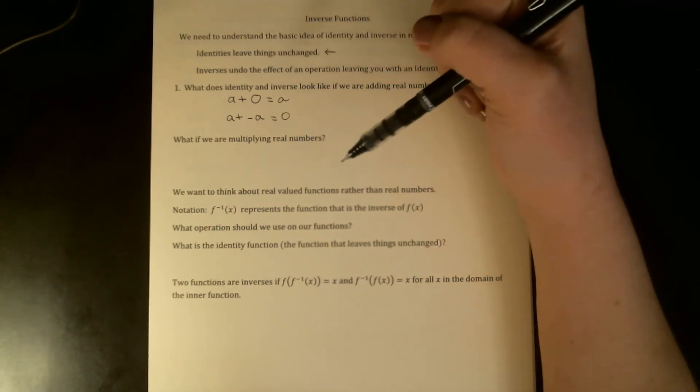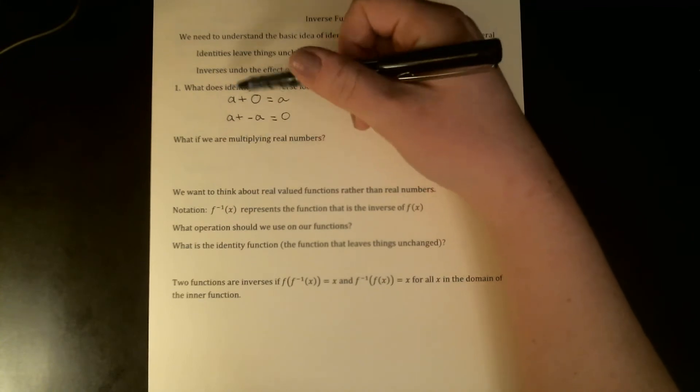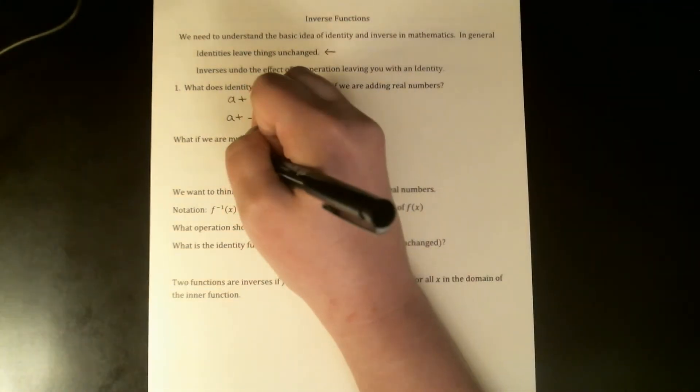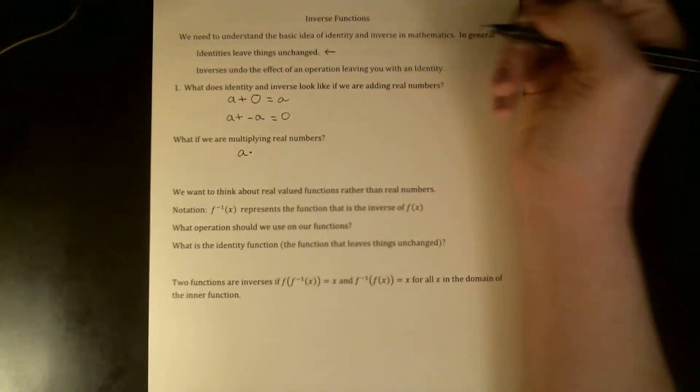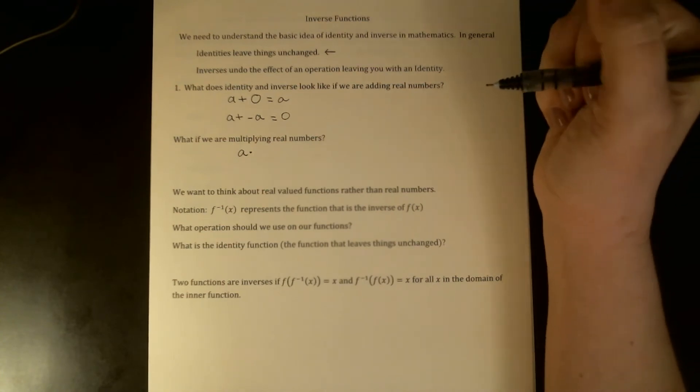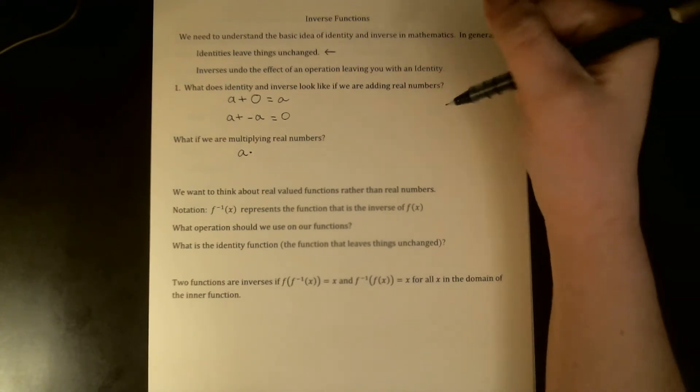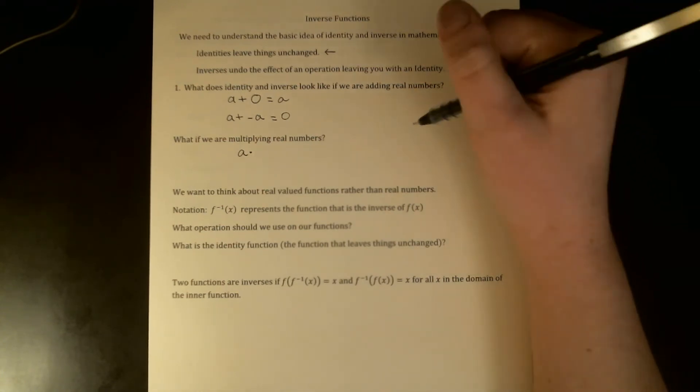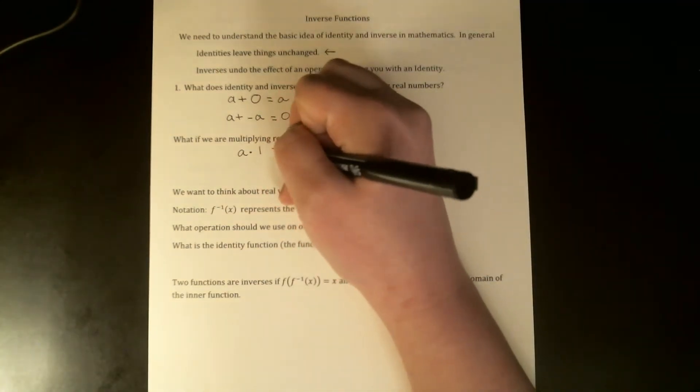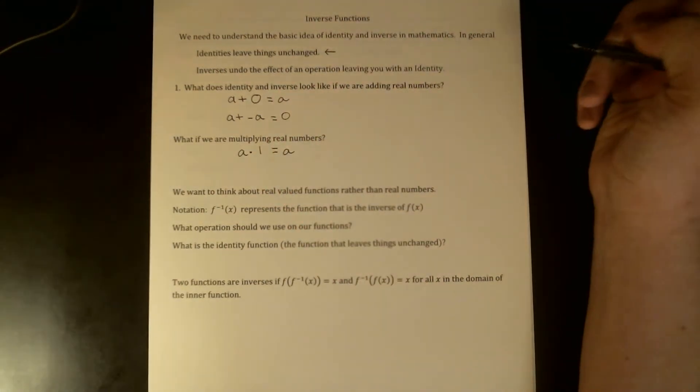If we're multiplying real numbers, we're thinking of still working with the same things—real numbers—but now the operation is multiplication, so it's going to change things a little bit. The first question is what is my identity? What can I multiply a by that will not change it? The answer is one. If you multiply any real number by one, you still have the same number.